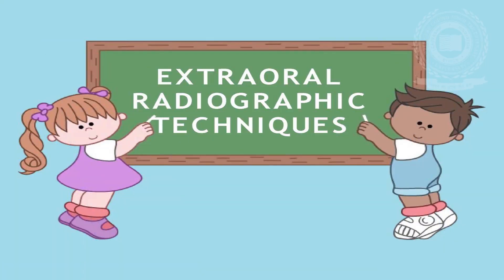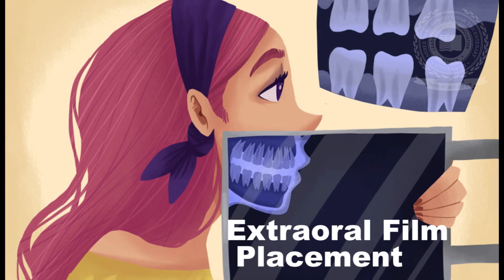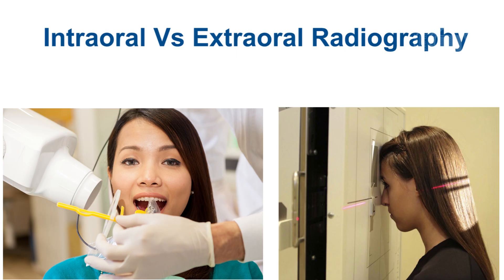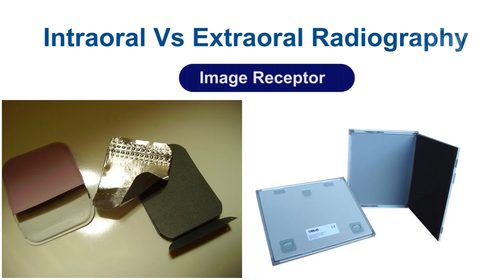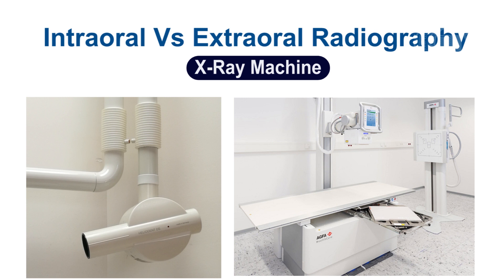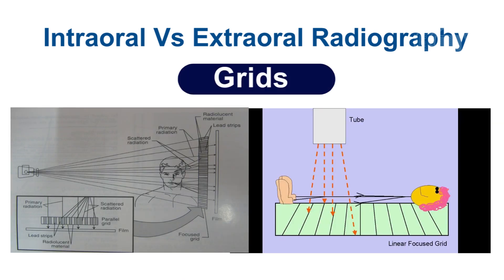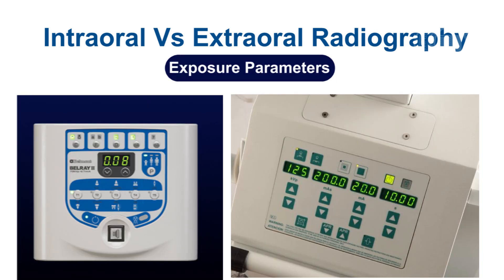As the name suggests, in extraoral radiography, the image receptor is placed outside the patient's oral cavity. Apart from this basic difference, it differs from intraoral radiography in terms of the image receptor used, the x-ray machine, the use of grids, and change in the exposure parameters.